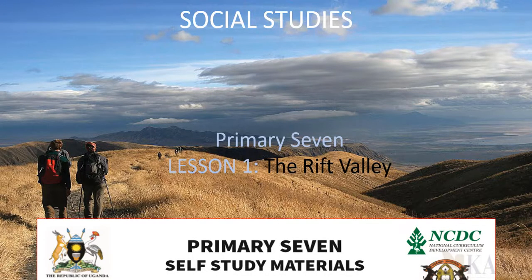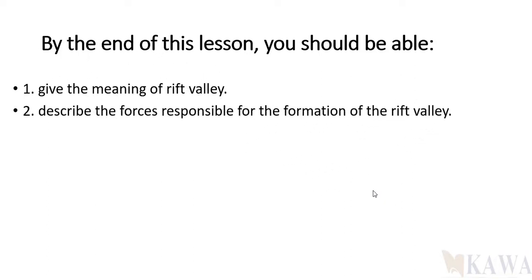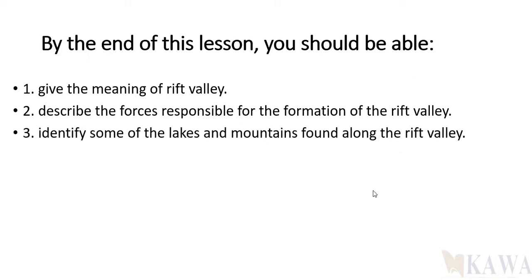We are now looking at the learning outcomes for Primary Seven. By the end of this lesson, the learner should be able to give the meaning of the word 'rift valley,' and should also be able to describe the forces responsible for the formation of the rift valley. Three: should be able to identify some of the lakes and mountains.